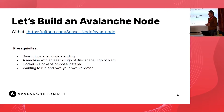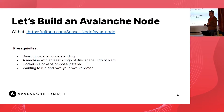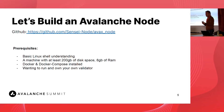There are 16,000 Avalanche nodes out there, partly because it's technical but not as hard as building, say, a Monero node. Avalanche made it simple, and I think they got that spot on — it has helped a lot with decentralization.